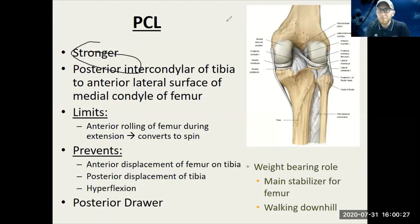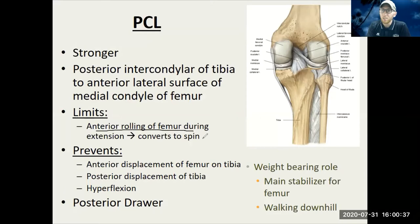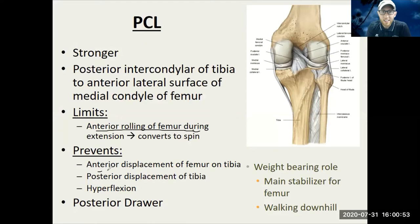The PCL is stronger and thicker, so it's super strong back there. It's going to limit the anterior rolling of the femur during extension — in other words, it doesn't let the knee excessively extend. And then it's going to prevent the anterior displacement of the femur and the posterior displacement of the tibia — that's the opposite of the ACL for those motions.